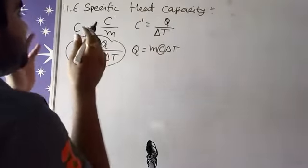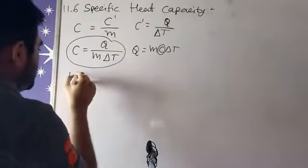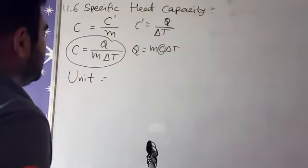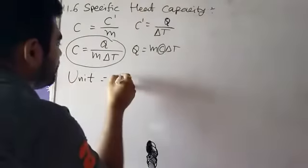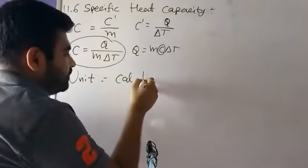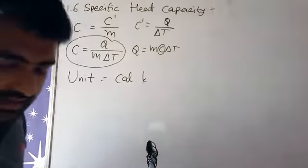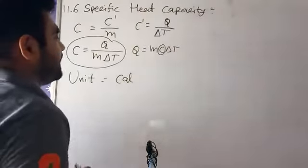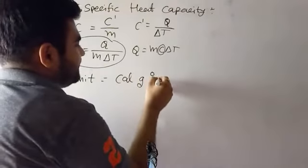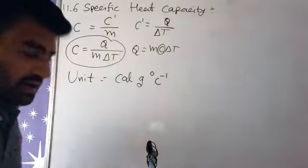If specific capacity is a unit of specific capacity, then what is the unit of specific capacity? First, Q, Q is a calorie. M mass is a kilogram. If there is a calorie, then it will be gram in CGS. And here, delta T, which is our degree Celsius inverse.